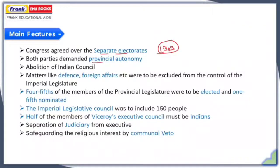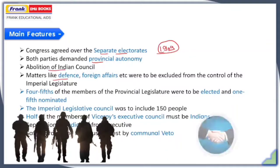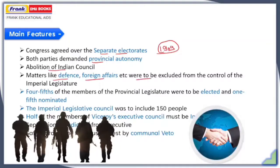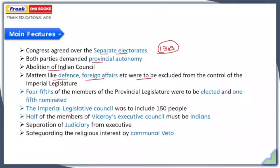Both the parties also demanded provincial autonomy, and they asked the British government for the abolition of the Indian Council, because they did not want any kind of political intervention in their provincial matters. They also said that matters like defense and foreign affairs were to be excluded from the control of the imperial legislature and must be placed under the control of provincial politics.